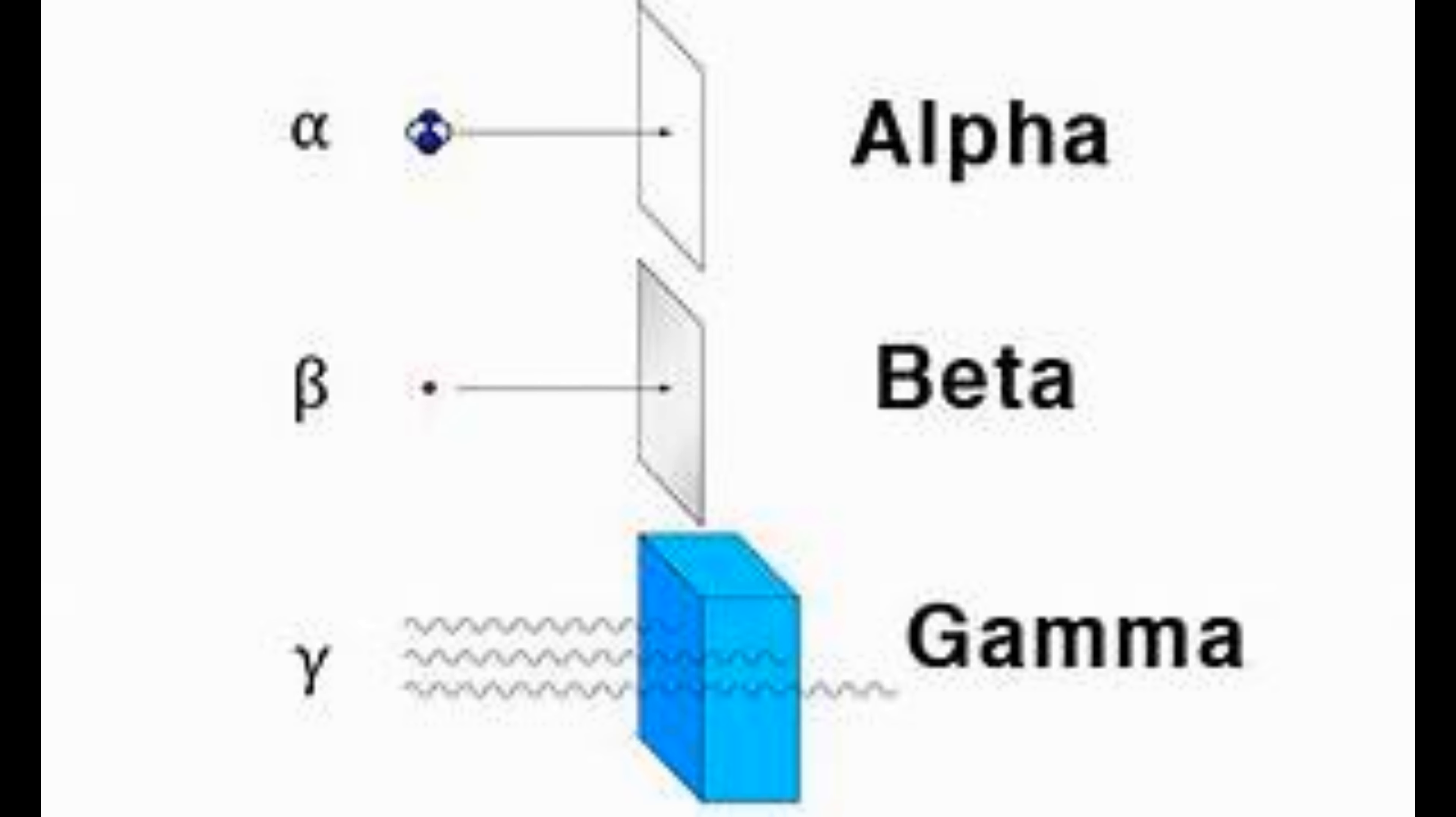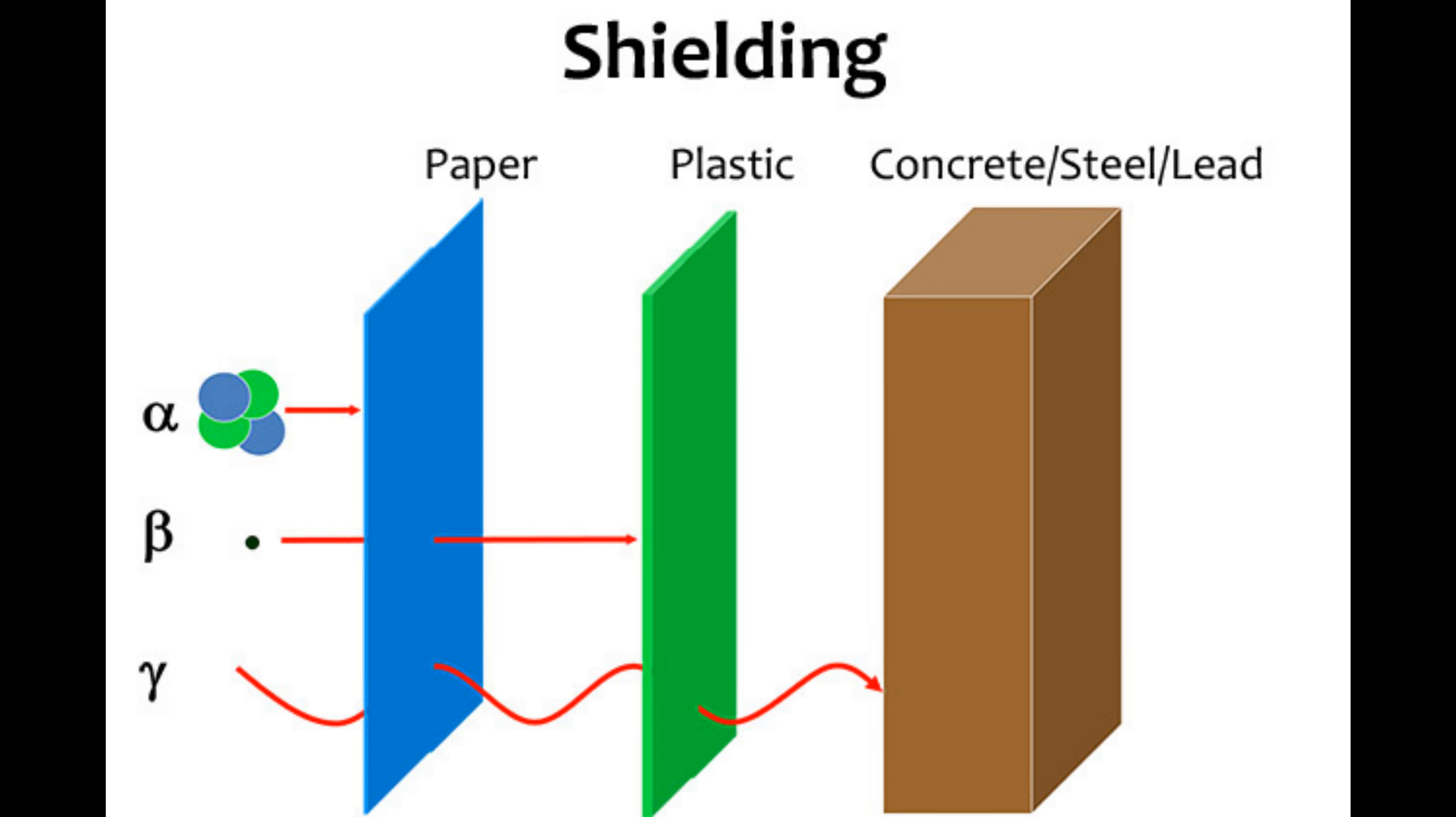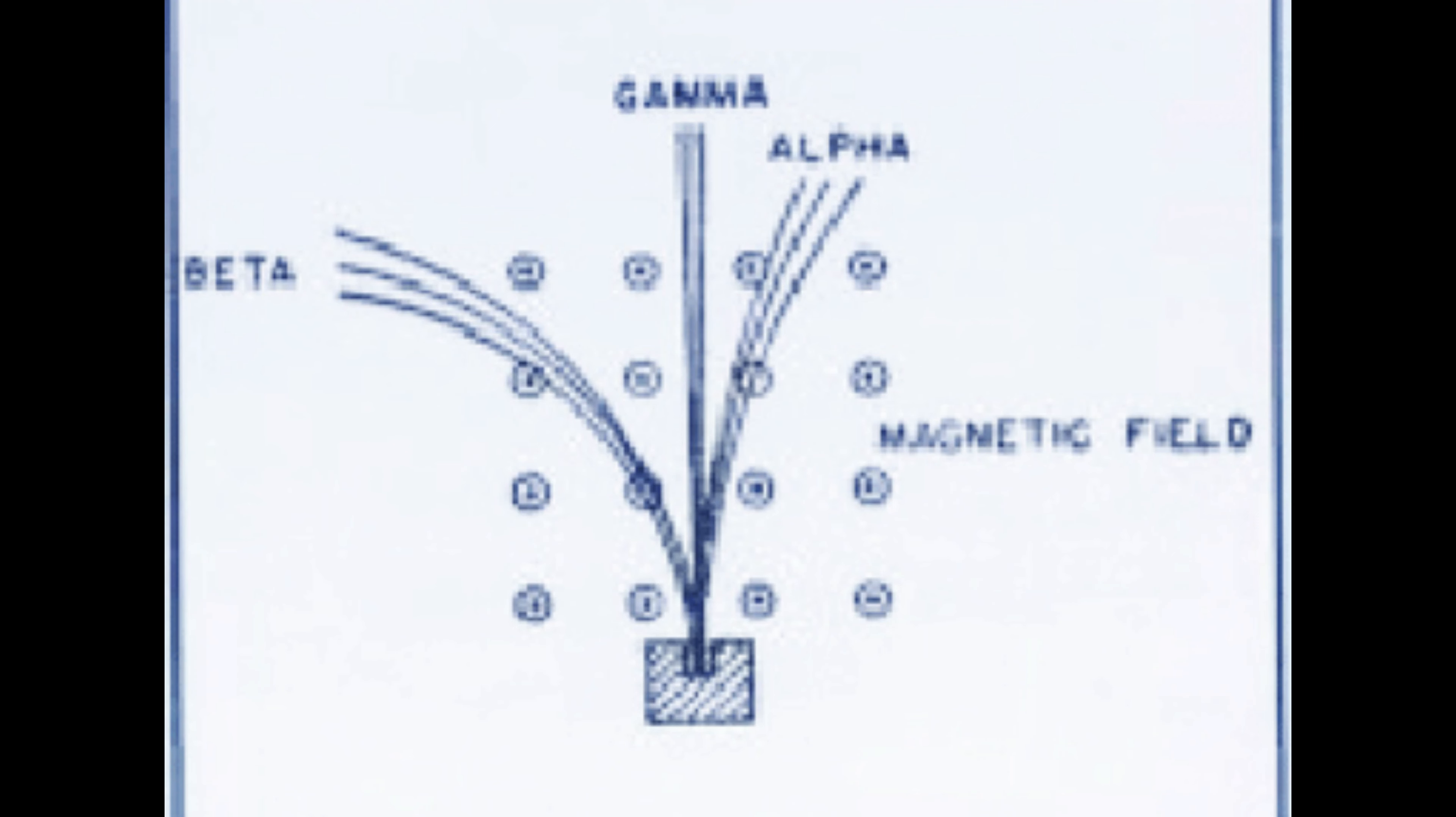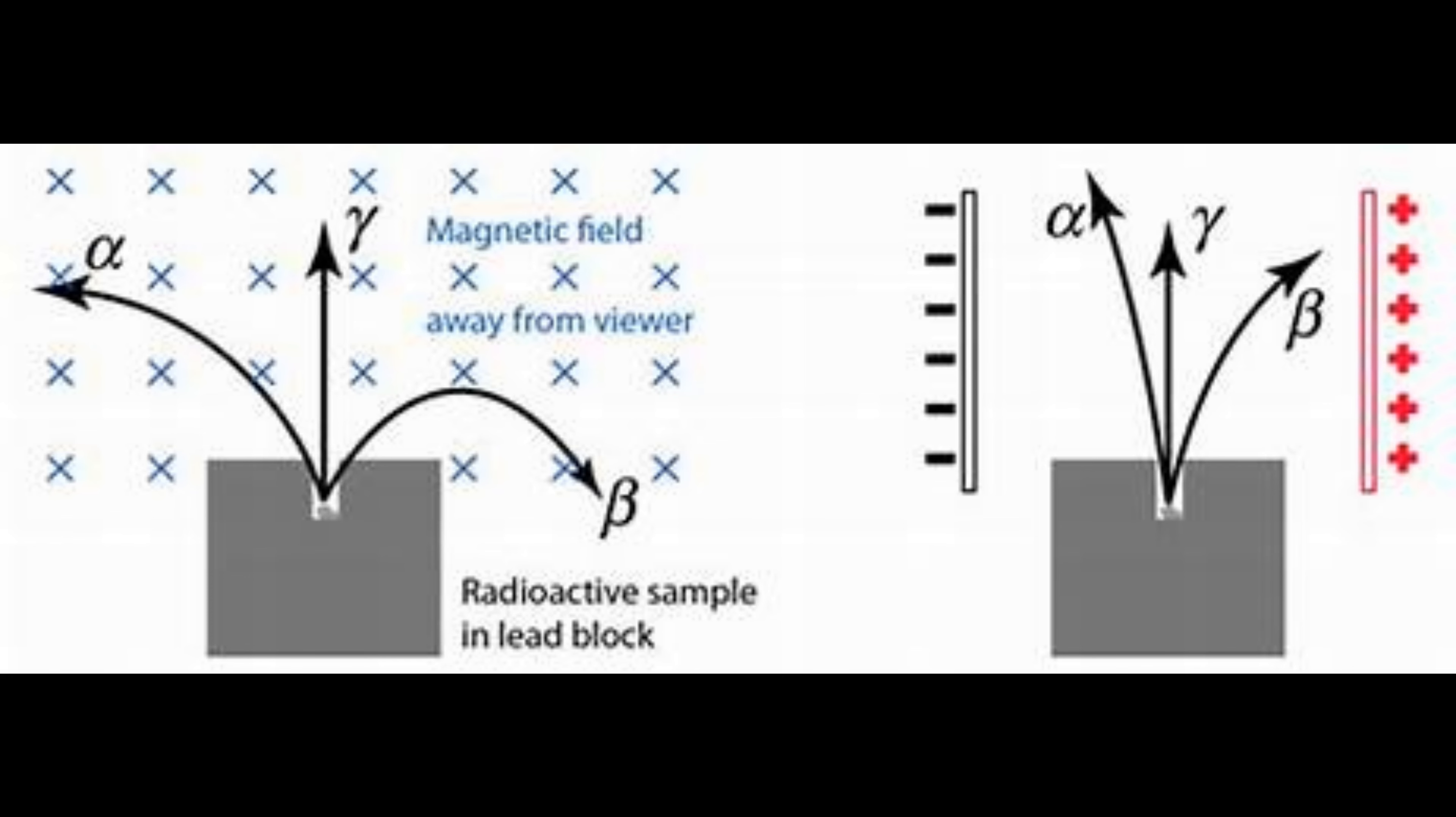Beta particles are electrons or anti-neutrinos, and gamma rays are electromagnetic radiations. Alpha and beta particles and gamma radiations can be separated by subjecting them to electric or magnetic fields. Alpha particles deflect towards the negative plate because they have a positive charge, and beta particles deflect towards the positive plate because they are negatively charged.